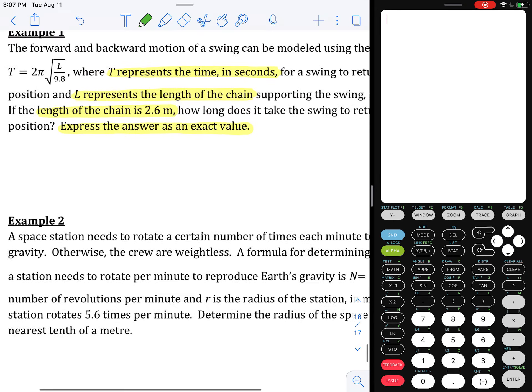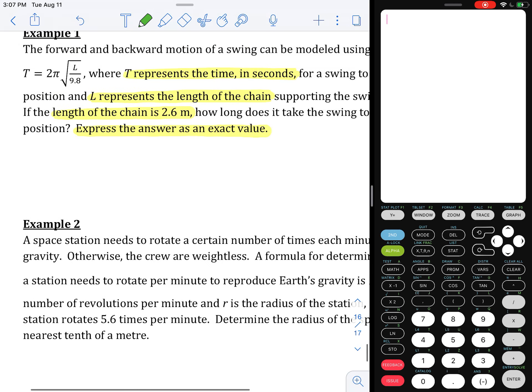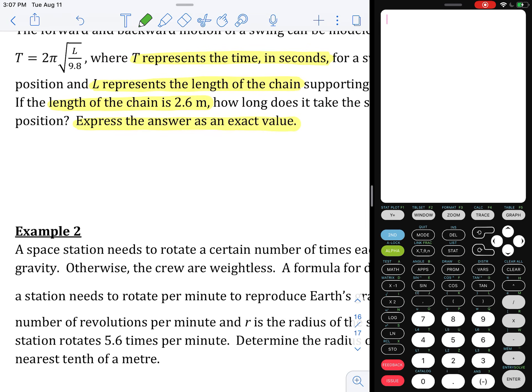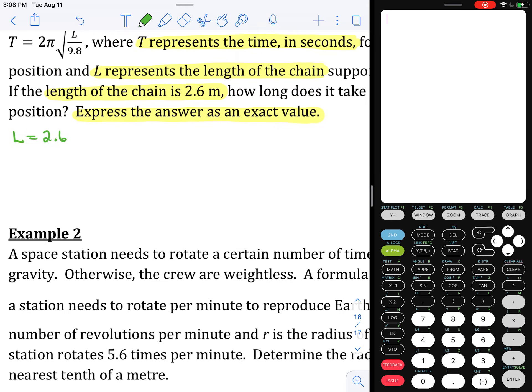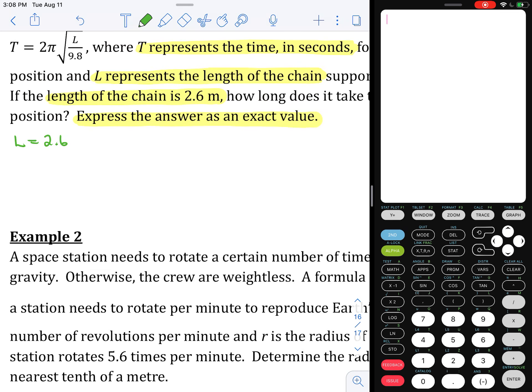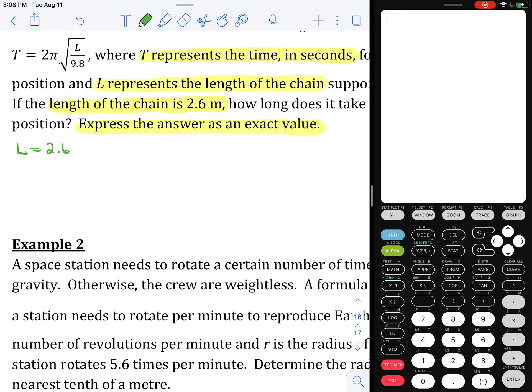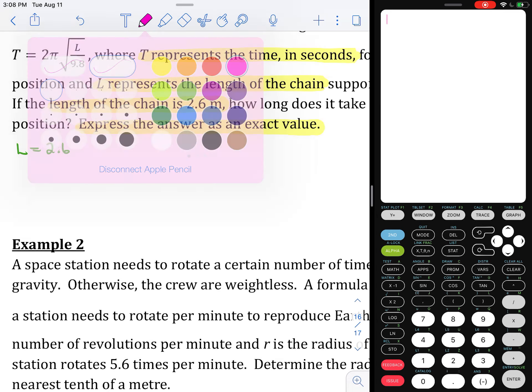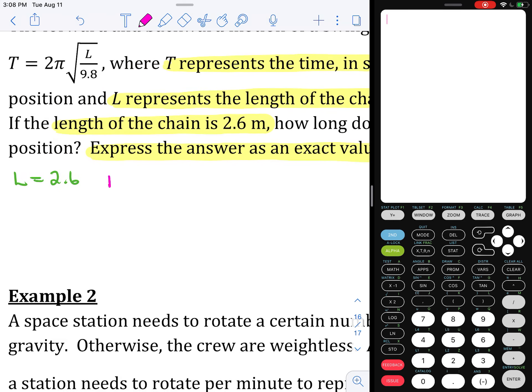What we're told here is that the length of the chain is 2.6 meters, so that means L equals 2.6. I'm going to take that L value and substitute it into our formula in place of L. That's going to give me T equals 2π times the square root of 2.6 over 9.8.